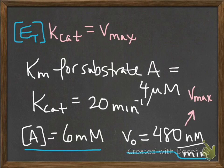From here, you just plug in 480 for your Vmax and 20 for your Kcat, and you can solve for your total enzyme concentration. You get the answer that's in the solutions manual of 24 nanomolar.